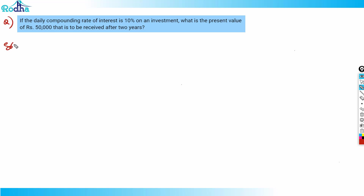This question says: if the daily compounding rate of interest is 10 percent on an investment, what is the present value of ₹50,000 that is to be received after two years? So what do we mean by daily compounding rate of interest?